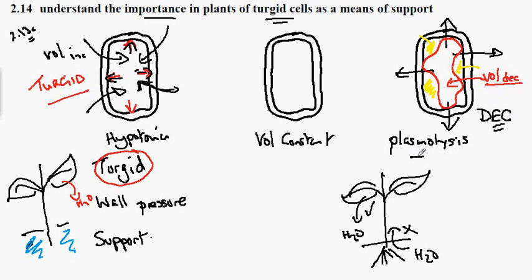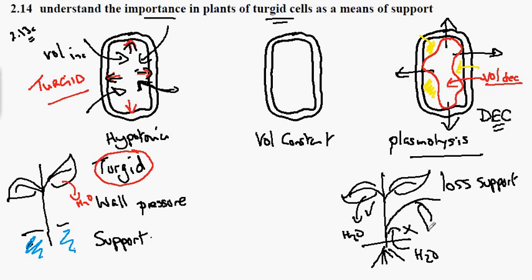The tissue is said to become plasmolyzed, and in plants this results in a loss of support. For the whole plant, characteristically we would see it bending like this — losing the support, it would bend over like this — and it has been said to have wilted. So in a wilted plant, because of excessive water loss, the tissues have become plasmolyzed and we lose support.